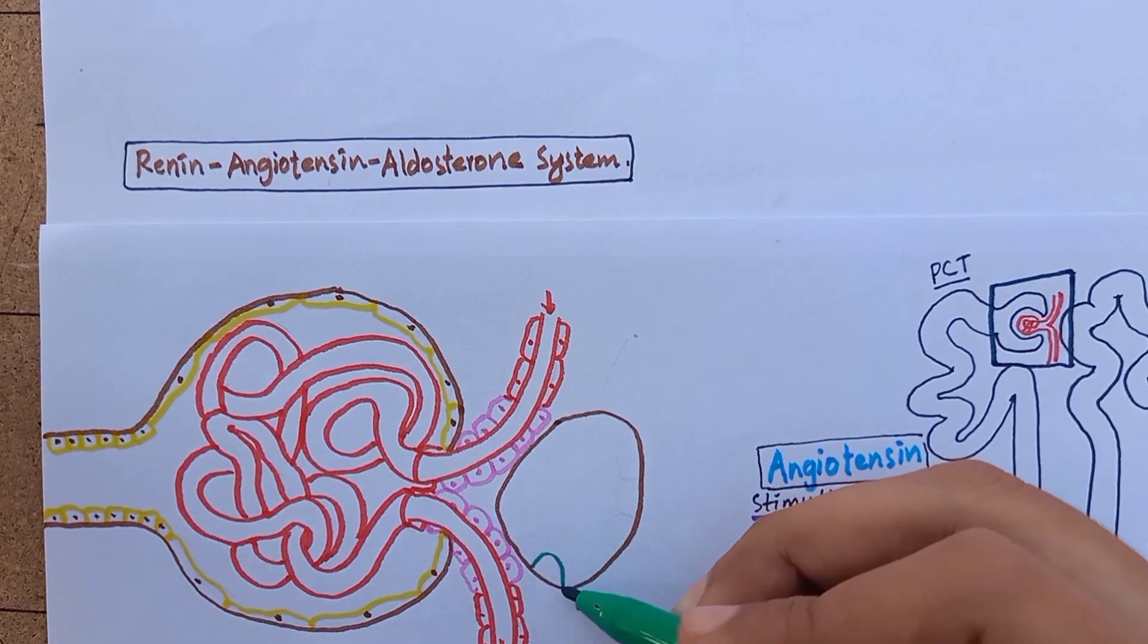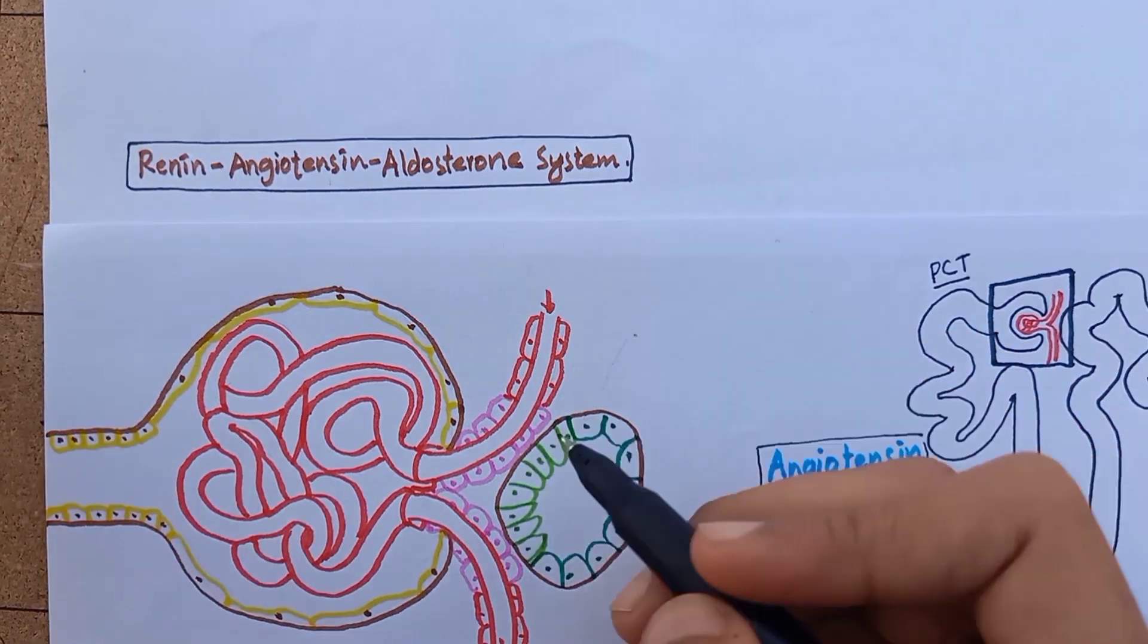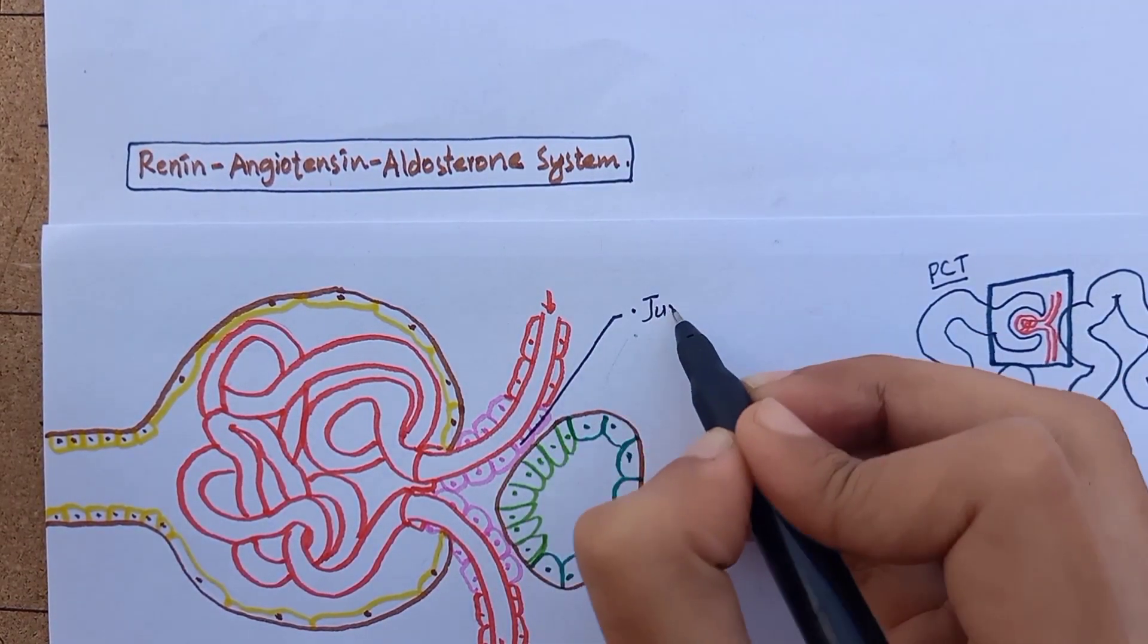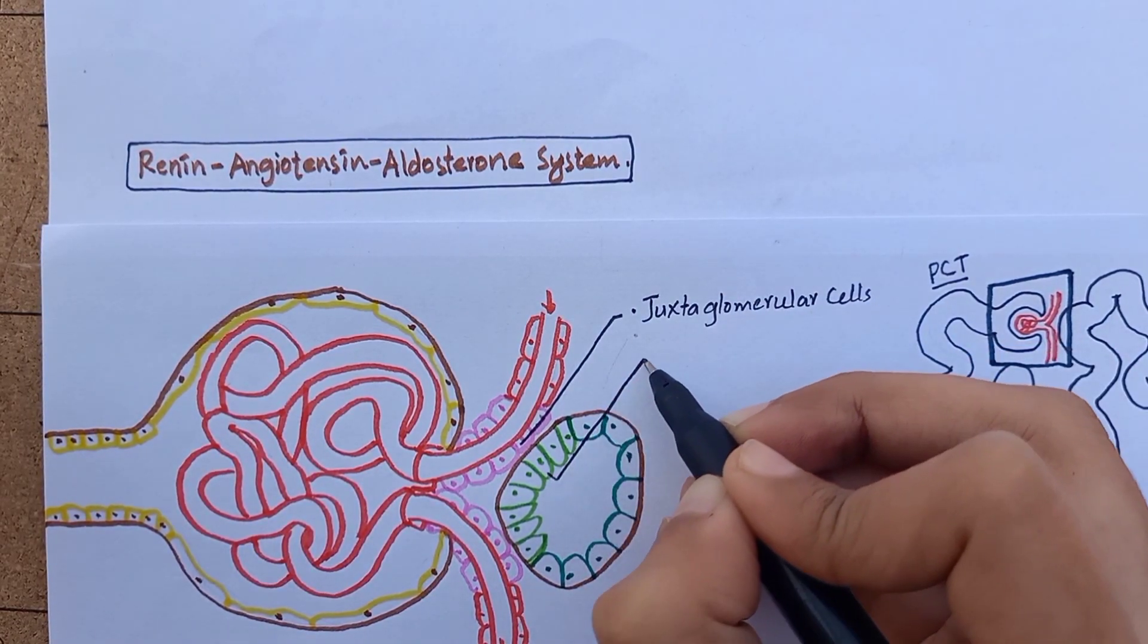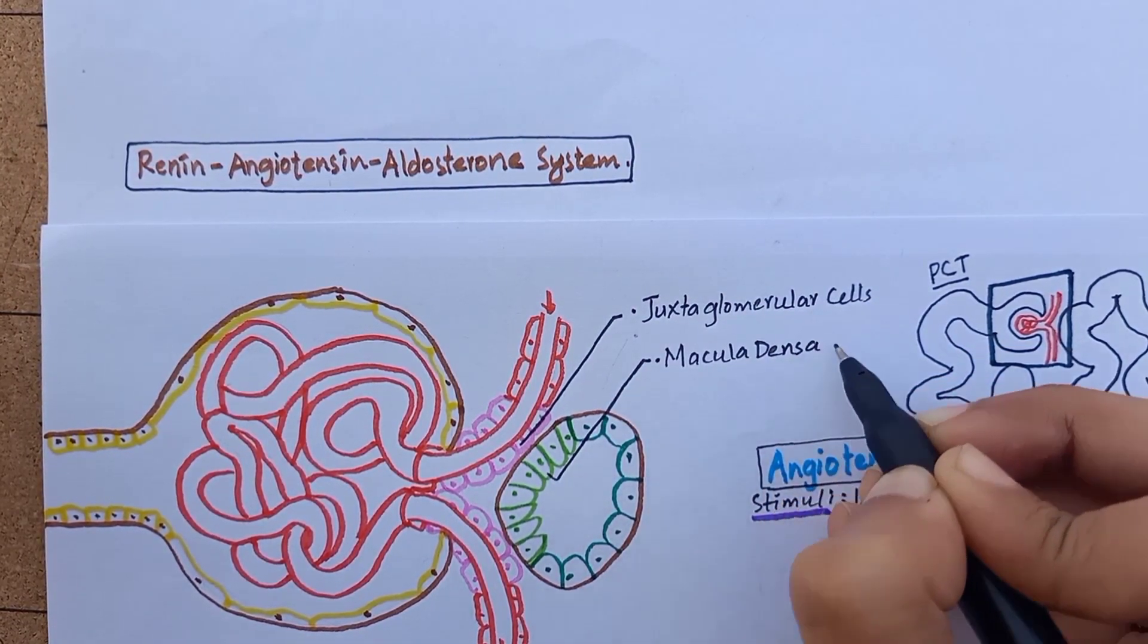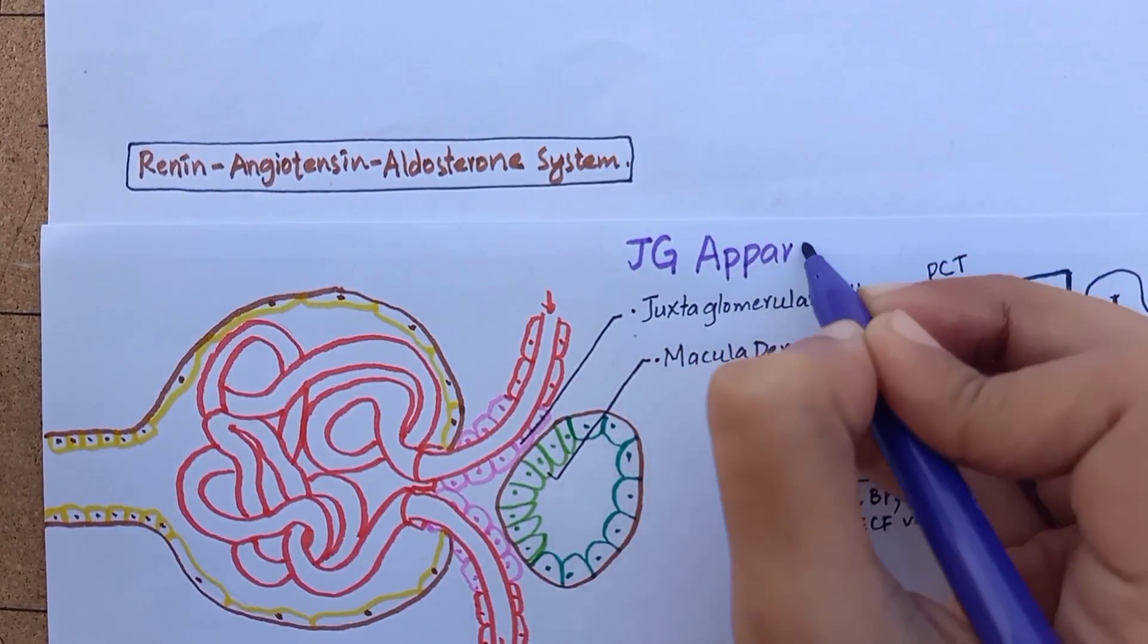And there are macula densa cells, which is a specialized group of epithelial cells in the distal tubule that come in close contact with afferent and efferent arterioles. These two groups of cells form the juxtaglomerular complex or juxtaglomerular apparatus.